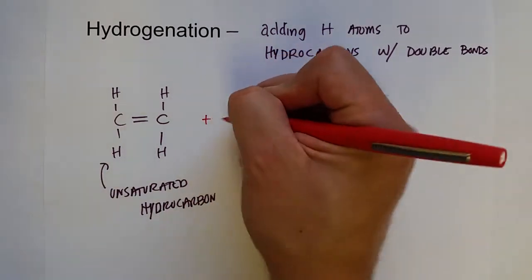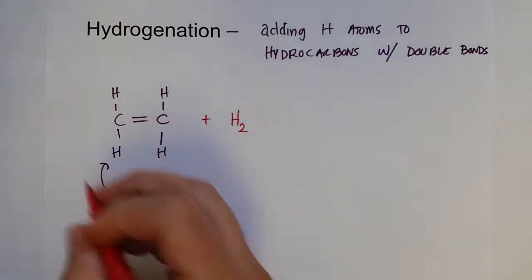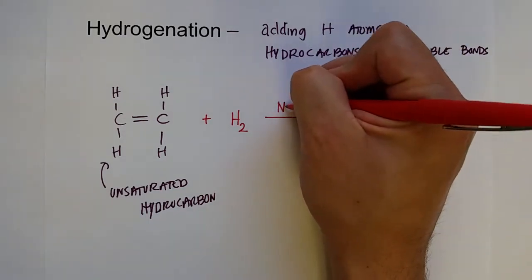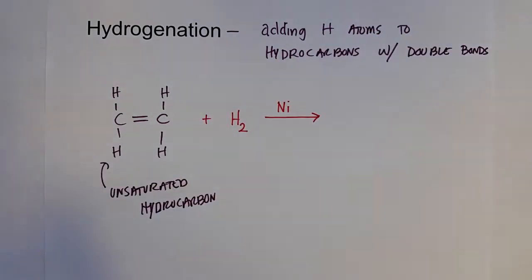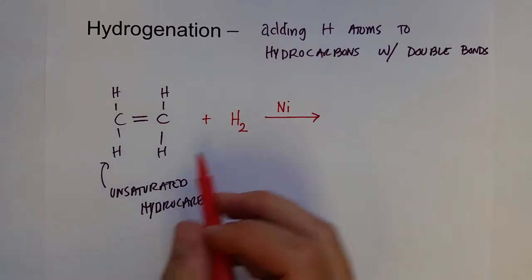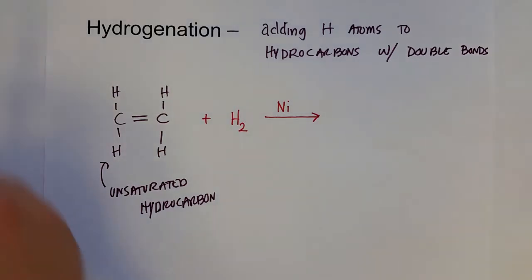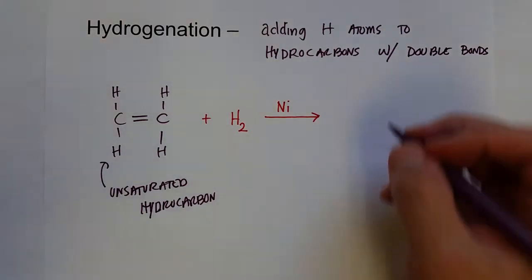We can do this by reacting it with hydrogen, usually with a catalyst, such as a metal catalyst such as nickel or platinum, and essentially what happens is these hydrogen atoms are added to each carbon.